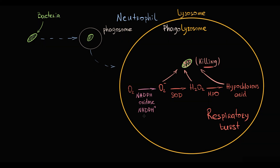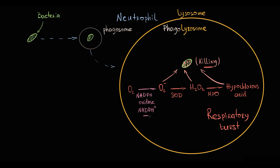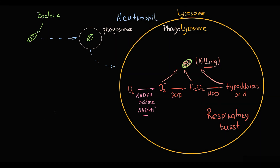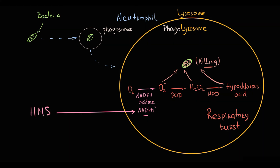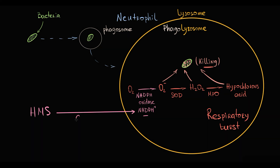NADPH is the absolutely essential element of the respiratory burst. The source of NADPH molecules is the oxidative phase of the Hexose Monophosphate Shunt, and the key enzyme of the Hexose Monophosphate Shunt is Glucose-6-phosphate dehydrogenase.